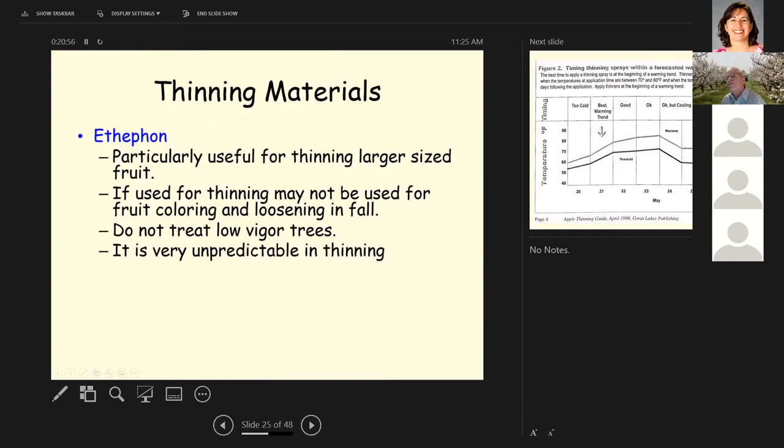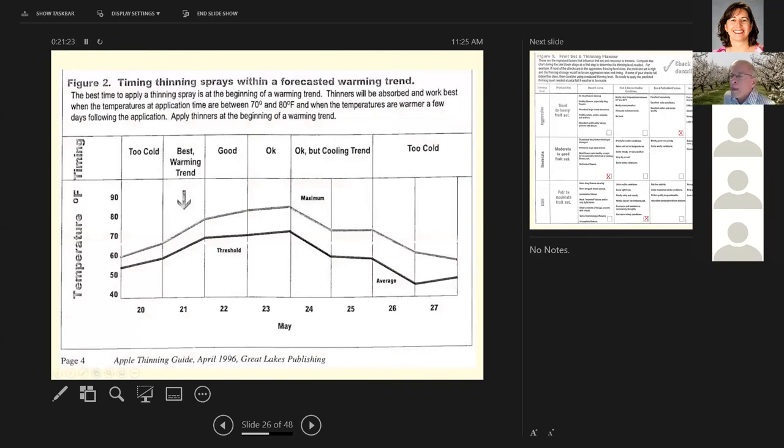Ethephon is a fourth thinning material. It's uses for thinning larger sized fruit. Now, if you use this for thinning, you do not want to use ethephon in the fall for fruit coloring or loosening the fruit in the fall. You do not want to use ethephon on low vigor trees. And ethephon is very unpredictable in thinning. So this is not going to be your first choice.